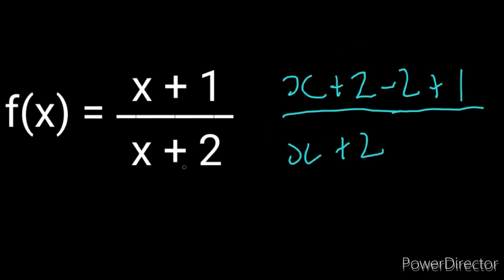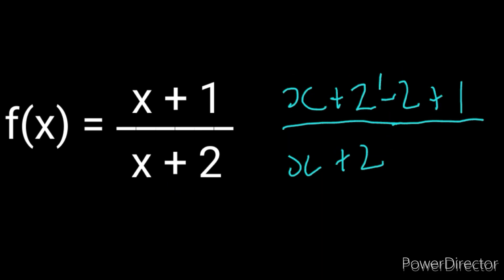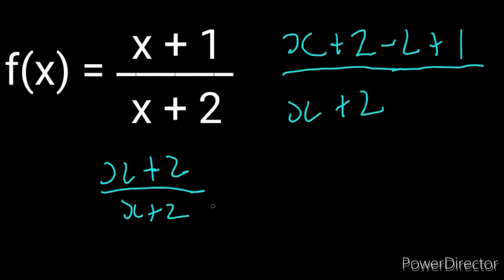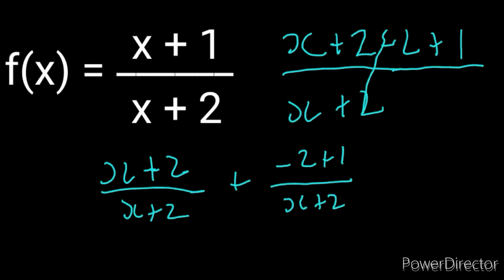We always have to check what is in the denominator, then we always have to add that thing and subtract it at the same time. Afterwards, we now have to split this fraction. This is going to end up becoming x plus 2 over x plus 2, and then we're going to have plus negative 2 plus 1 over x plus 2. Notice that I just split the fraction.